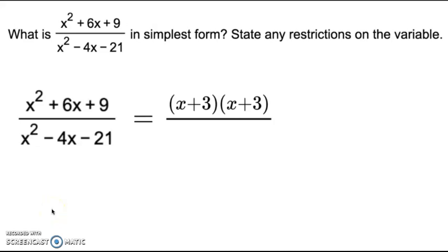Doing the same thing for the denominator, I need numbers that multiply to negative 21 but add up to negative 4. Those numbers are positive 3 and negative 7. So x plus 3 times x minus 7.